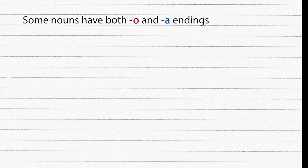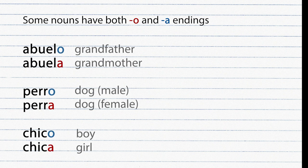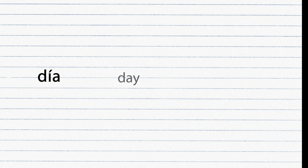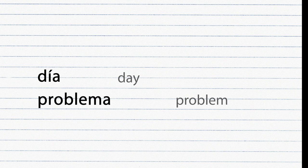Some nouns have both O and A endings: Abuelo/Abuela, Perro/Perra, Chico/Chica. However, not every word ending in A is feminine. For example, 'día' meaning day ends with A but is a masculine word. Similarly, 'problema' ends with A but is masculine.